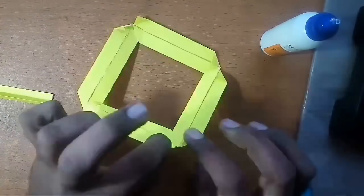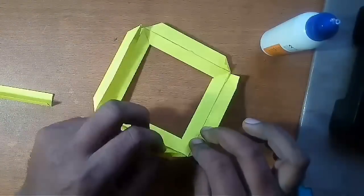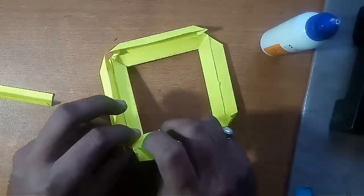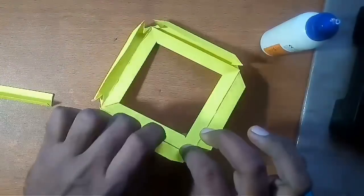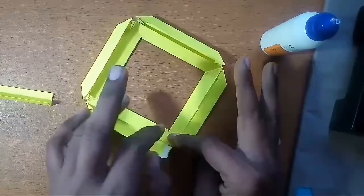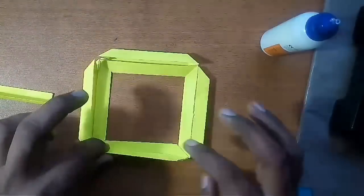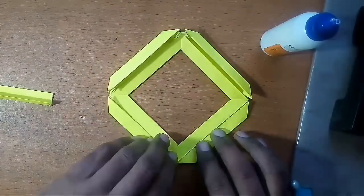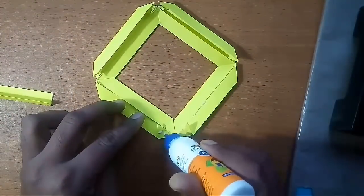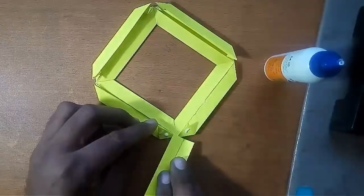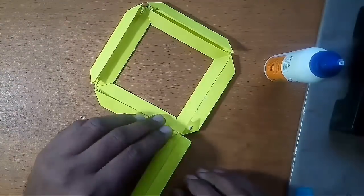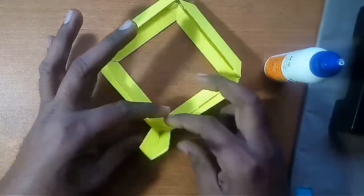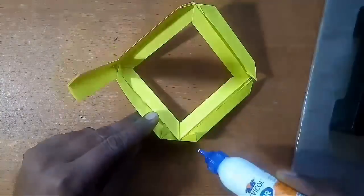Now take the strip which was not folded from the corner. Apply glue on the flap of the inserted triangles of each corner and fix the strip vertically. In this way fix all the four strips vertically.